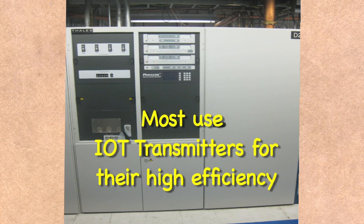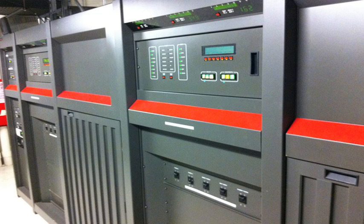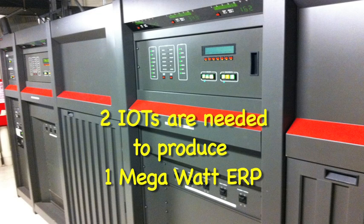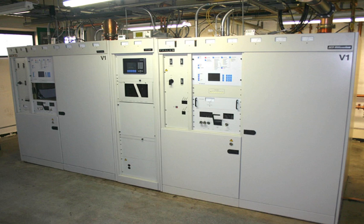Most stations today have two IoT transmitters working in parallel to produce their final output power to the antenna. Some use a solid-state backup transmitter, but at the higher power levels, the solid-state transmitters use more electrical power than a tube transmitter does. IoTs are used around the world for television broadcasting.